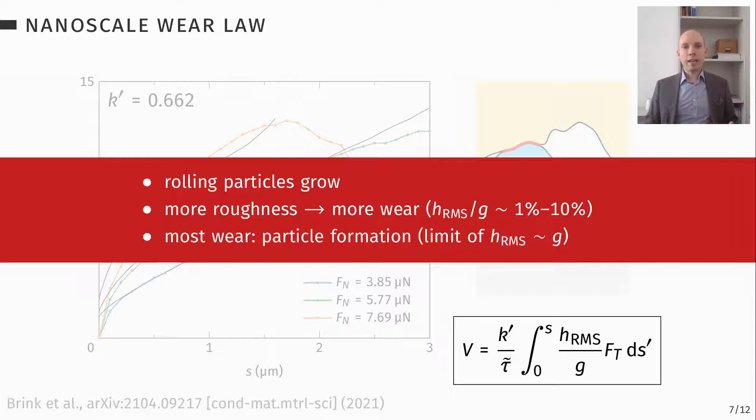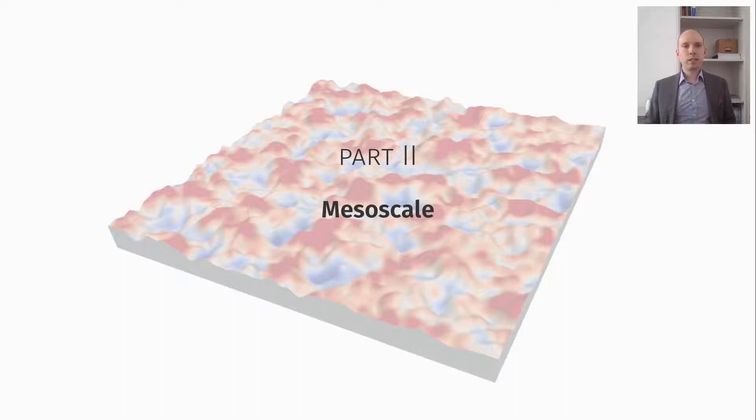You can then view the asperity-asperity collision, which then leads to the particle formation, as a limit of this. Because each asperity kind of represents both h_rms, so the roughness, and the particle size, so they're equal, making this much more efficient, 10 to 100 times more efficient than the growth of the particle.